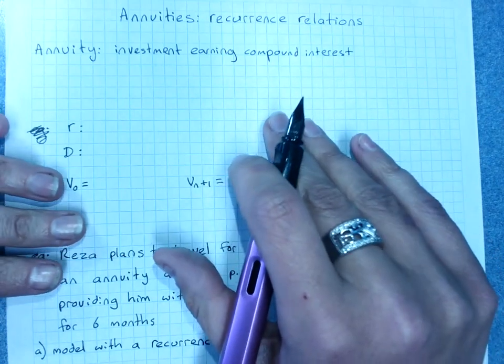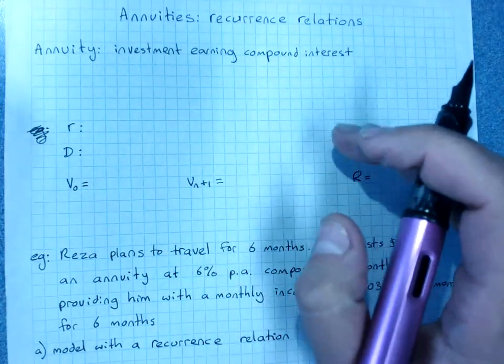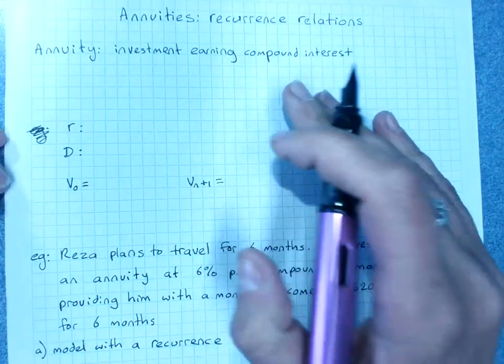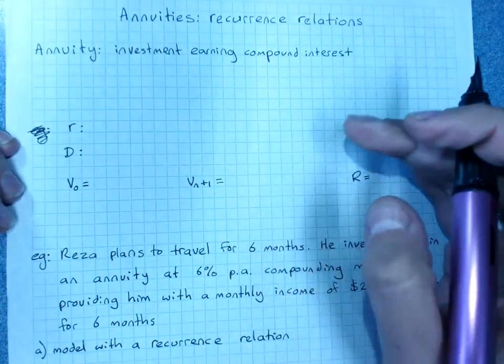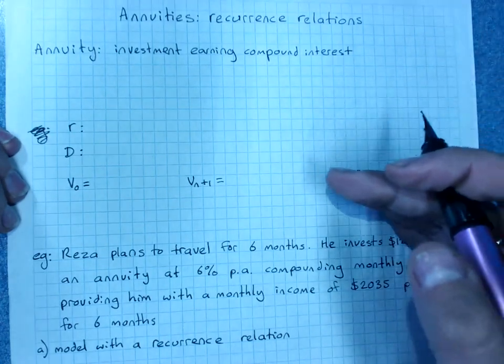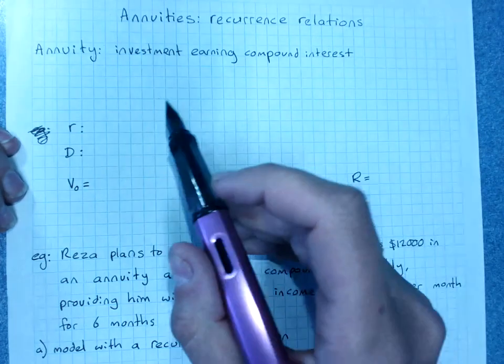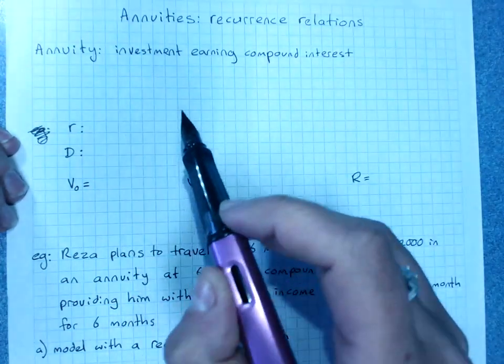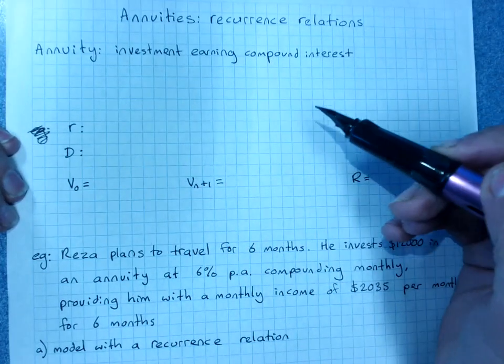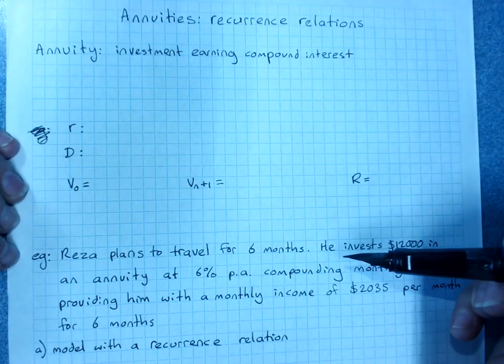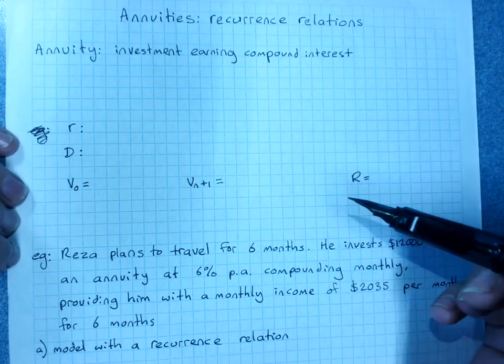Now with a reducing balance loan, you've borrowed money, extra interest is being charged so you owe more, and you're repaying back the money you borrowed. An annuity is the opposite. You've invested money, it's earning extra interest for you, but you're taking out regular payments so that you have an income from the annuity.